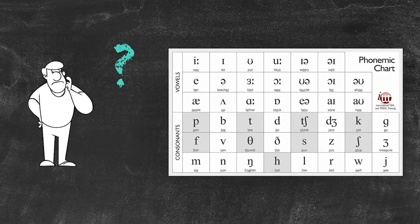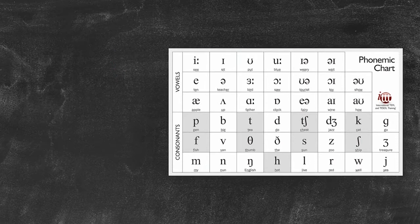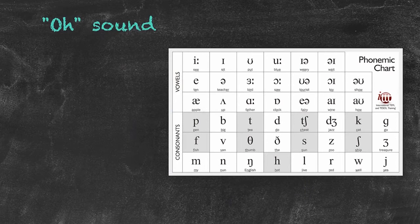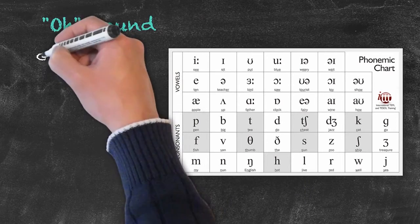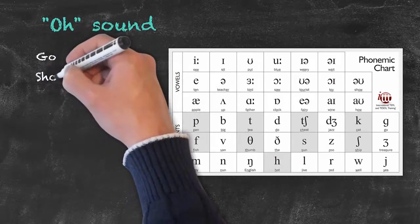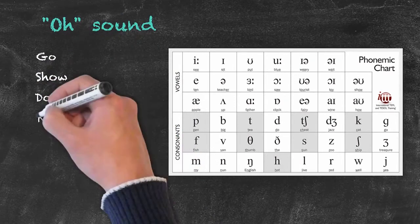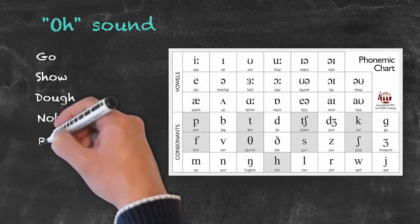To illustrate this point, let's put ourselves in the shoes of our students when trying to understand how to say the following words. Here we have a set of five words which share one sound — the O sound — as in go, show, dough, note, and boat.